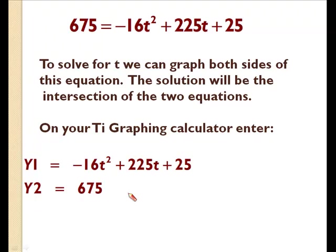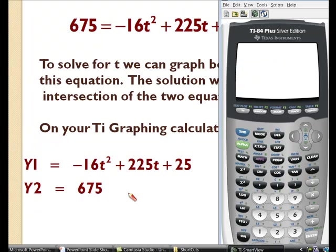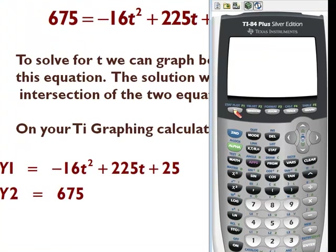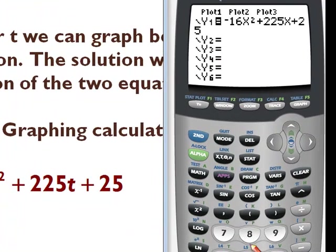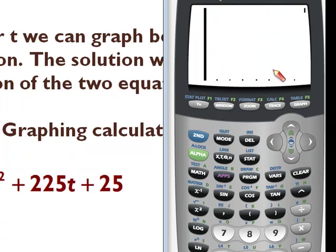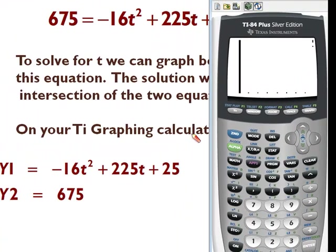This would be a good time to take out your TI graphing calculator. For Y1, I will enter what you see: -16x² + 225x + 25. And for Y2, we're going to use 675. Now if I were to graph this, I'll probably get something that doesn't look right. That's because my window is not correct.